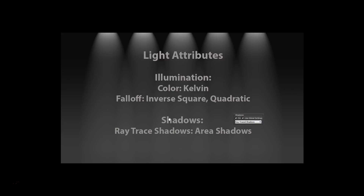We always want to use ray trace shadows. Ray trace shadows create area shadows, meaning the shadow will be sharper edged close to an object and become softer as it moves away — that's what real shadows do. If you leave the default, even on a photometric light, it defaults to a shadow map. A shadow map is just a bitmap being projected down — it's a cheat. For the most part, you want to switch to ray trace shadows for realistic, area-style shadows.